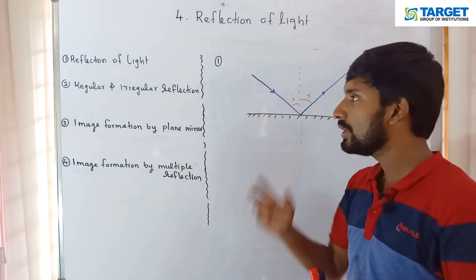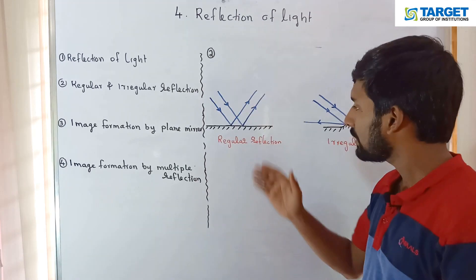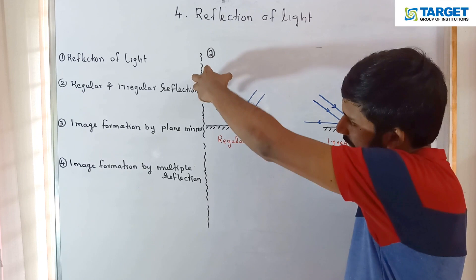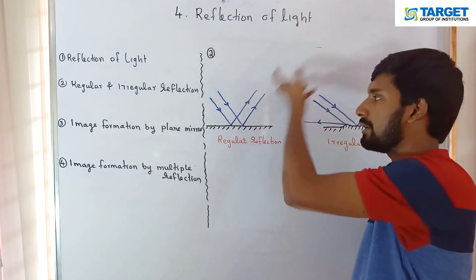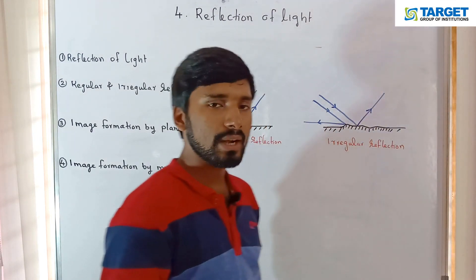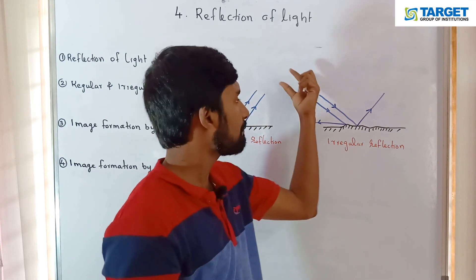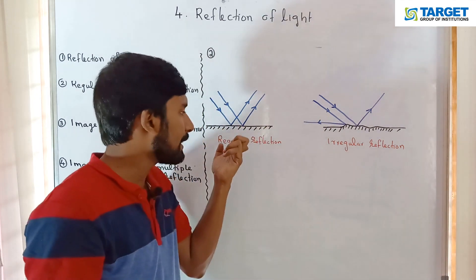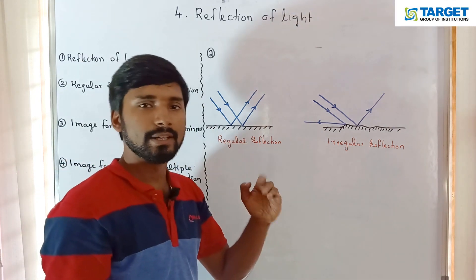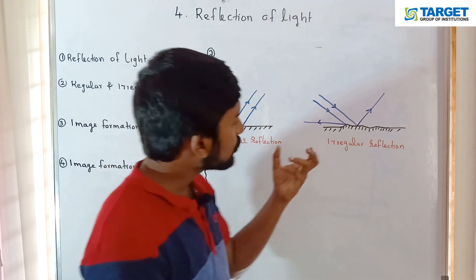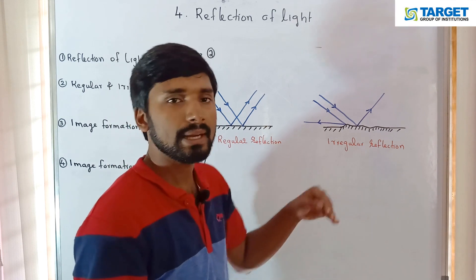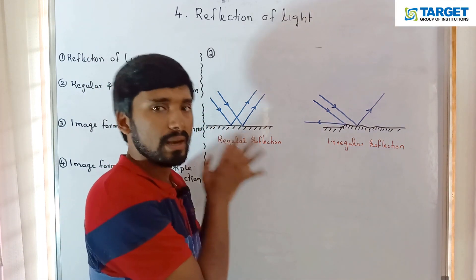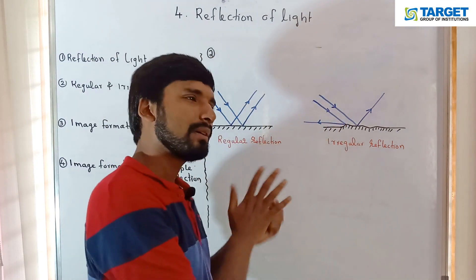Now we are moving to regular and irregular reflection of light. For regular reflection, consider a smooth surface. Two parallel light beams come to this surface — they are parallel light beams. When they reflect off this smooth surface, the reflected beams are also parallel. This is regular reflection, as occurs in a mirror with a smooth surface.